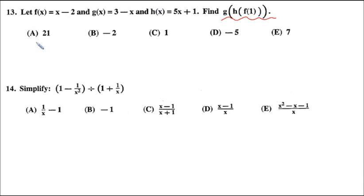So let's start with f of 1. If f of x is x minus 2, then f of 1 is 1 minus 2. We're just plugging that value in. So it's 1 minus 2. And that is negative 1.